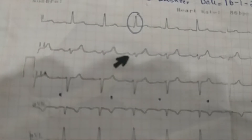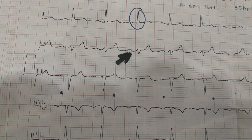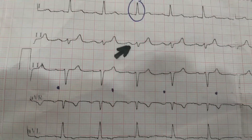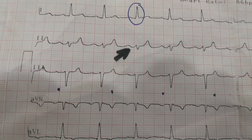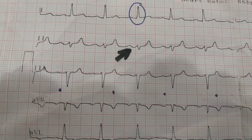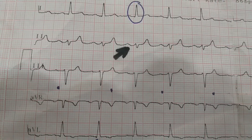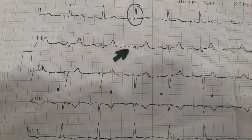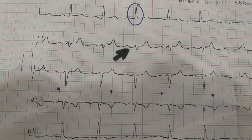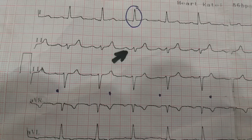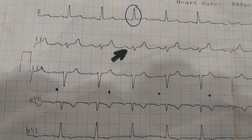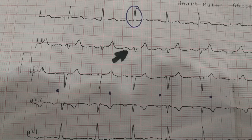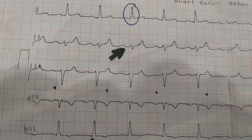In this ECG example, the black arrow is pointing towards the P wave in lead 2, which we call the rhythm lead. Looking closely, the height of the P wave is nowhere more than 2.5 small boxes, so this is well within the normal range. We can surely say this patient has not got right atrial hypertrophy.